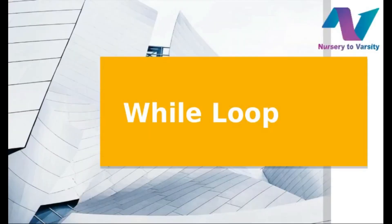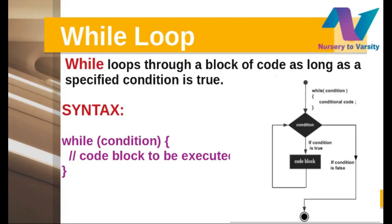Now let's look at the while loop. The while loop loops through a block of code as long as the condition is true. You initialize the variable at the start with a particular value, then pass a condition — if the condition is true, the code executes. The flowchart shows: check the condition; if true, execute the code block and loop back; if false, exit the loop.